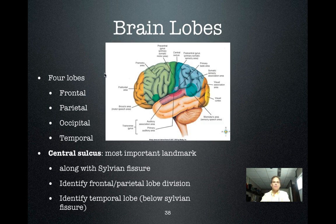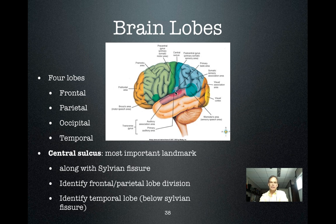There are four lobes of the brain: frontal, parietal, occipital, and temporal. Frontal is clearly divided from parietal by the central sulcus. Parietal lobe lies between the central sulcus and the sylvian fissure, and the temporal lobe is cordoned off by the sylvian fissure. The occipital lobe is more arbitrary, largely based upon the representation of vision in occipital cortex.